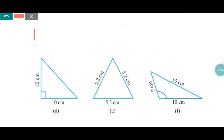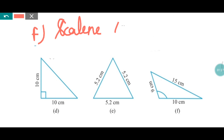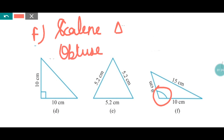Now part F. Here you can see the sides are 9cm, 15cm, and 10cm. All three sides are of different lengths, so it is a scalene triangle. And one angle is obtuse, so we can also write it as an obtuse angled triangle. In this way we can name all triangles according to the sides and according to the angles.